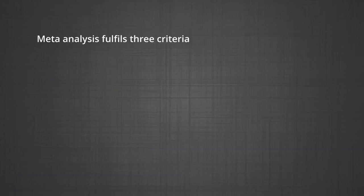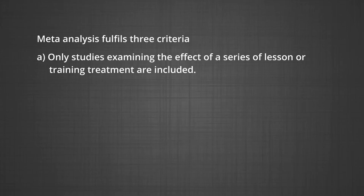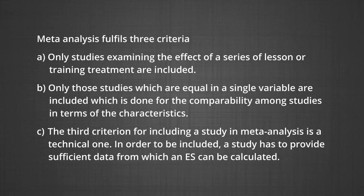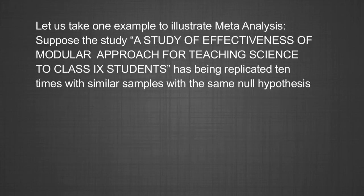Meta-analysis fulfills three criteria. Firstly, only studies examining the effect of a series of lesson or training treatment are included. Secondly, only those studies which are equal in a single variable are included, for comparability among studies in terms of their characteristics. Thirdly, a study must provide sufficient data from which an effect size can be calculated. To illustrate, suppose a study on the effectiveness of a modular approach for teaching science to class 9 students is replicated 10 times with similar samples and the same null hypothesis, measuring effectiveness in terms of achievement and learners' reactions towards the modular approach.